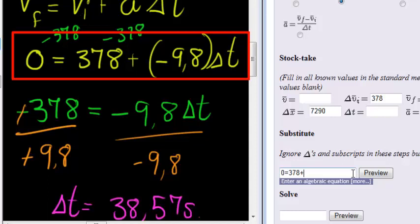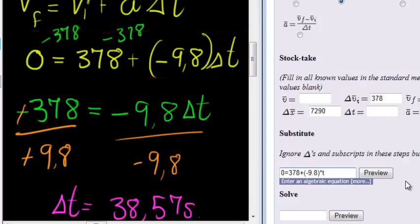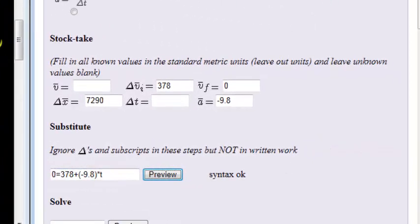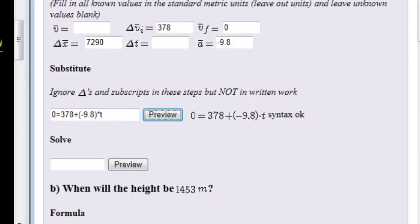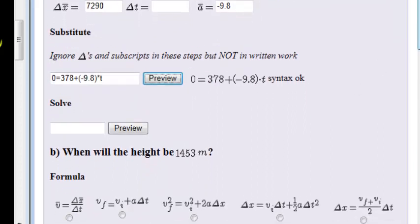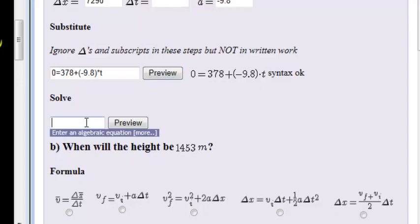And now I do my substitution step. That is this step, which means I simply substitute. 0 is equal to 378 plus, and in brackets, -9.8 times—and again, please don't put the delta, you can just put the t—preview to make sure, and that looks the way I wanted it to look.